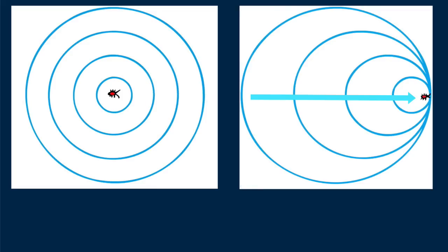If the bug swims to the right still bobbing and travels as fast as the waves it produces, then a snapshot of the wave pattern looks like this. The waves pile up in front of the bug. We say the waves superimpose directly in front of the bug.